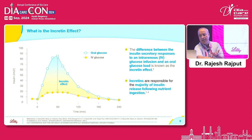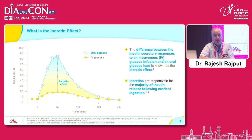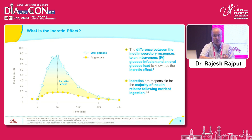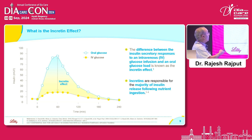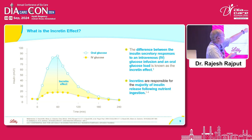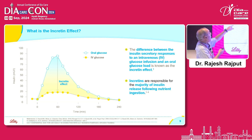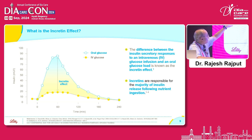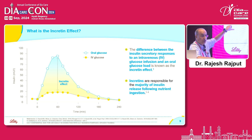What is the incretin effect? Whenever we eat something, intestinal incretin hormones are secreted, enter the plasma, act on pancreatic beta cells, and result in secretion of insulin. When you give the same individual the same amount of intravenous glucose versus oral glucose — resulting in a similar rise in plasma glucose — the insulin response is different. The area under the curve is greater with oral glucose than with IV glucose, and this difference is known as the incretin effect: the increase in insulin secretion in response to gut hormones when we eat.